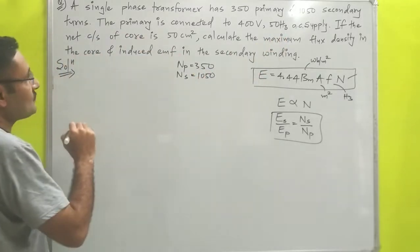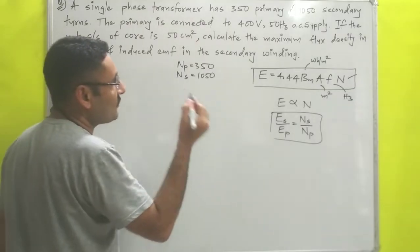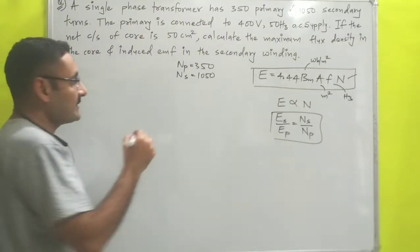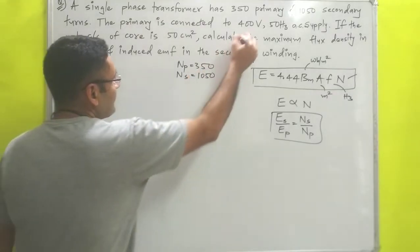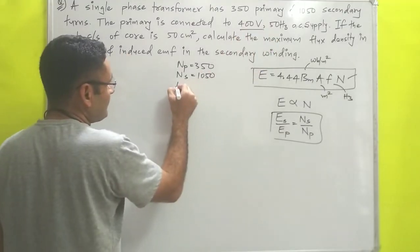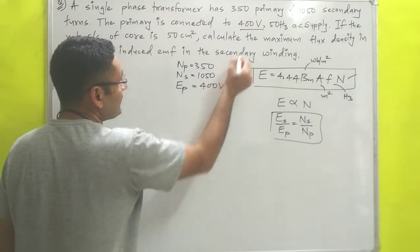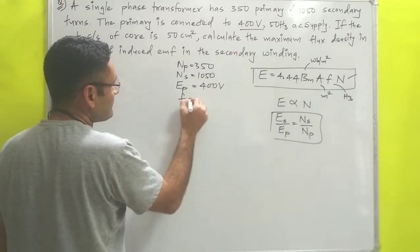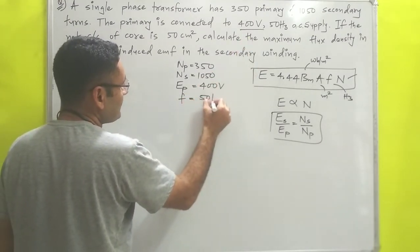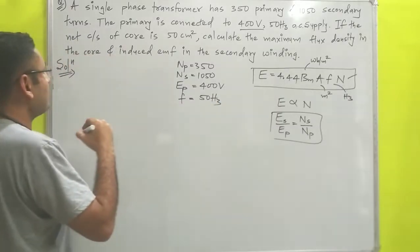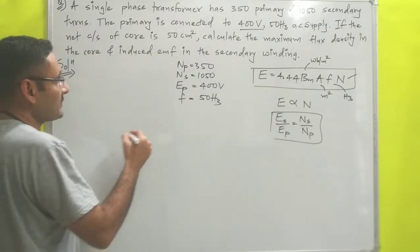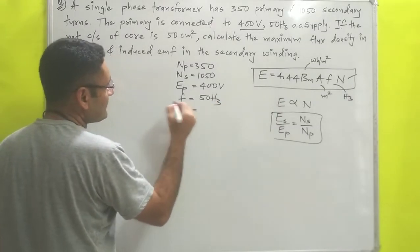Next, the primary is connected to 400 volt, that means EMF for primary is 400 volt, and 50 hertz means frequency of the source is 50 hertz.